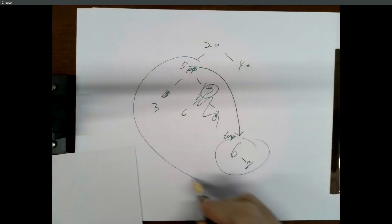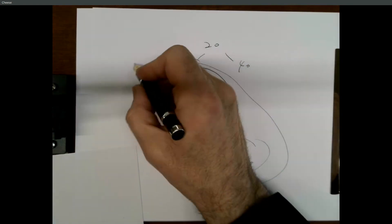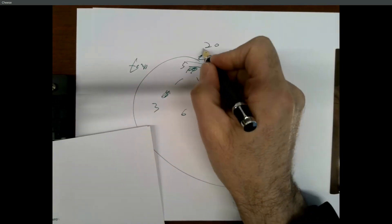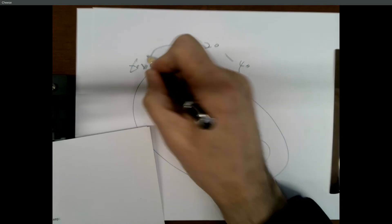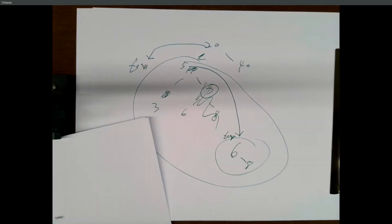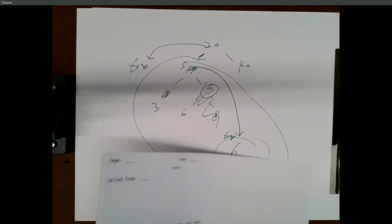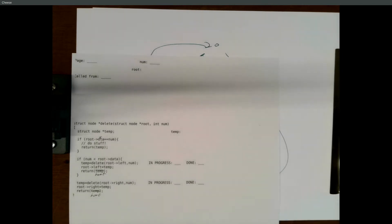That was a recursive call up here where we deleted from the left. So when we get back from that, all of this is temp, and then it says root arrow left equals temp. So now 20 points to the five, the three, the six, the eight. That's what I mean by it hooks everything back up on the way out of the recursion.